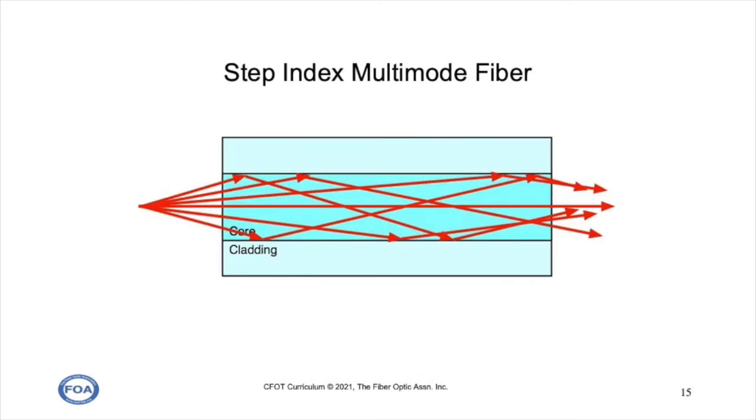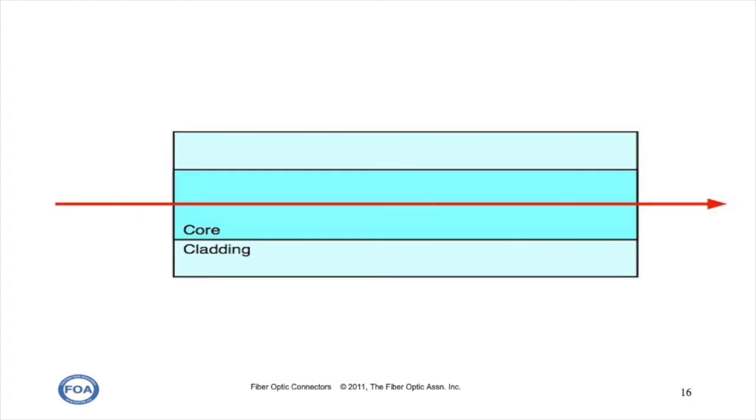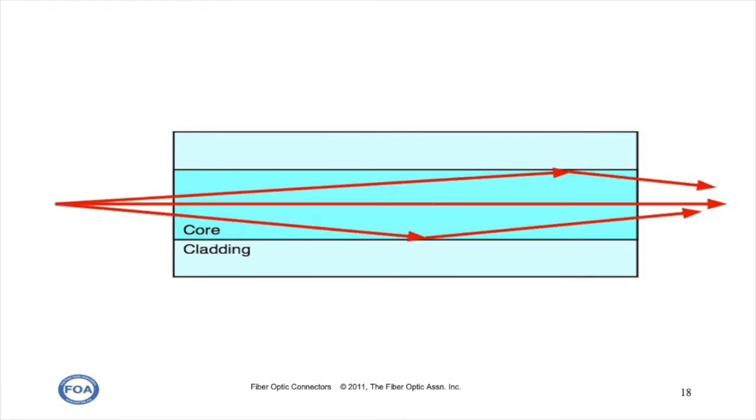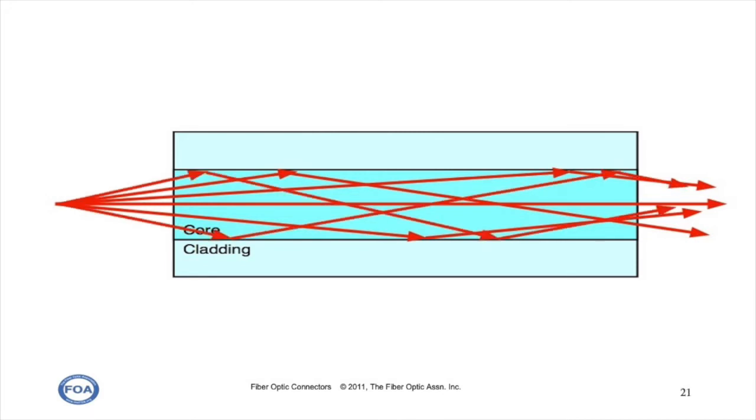Step index multi-mode fiber propagates lots of rays or modes inside the core of the fiber, and all the rays travel in straight lines, essentially bouncing from core cladding interface on either side of the fiber. The rays travel in straight lines down the center and at various angles, limited by the total internal reflection angle of the fiber, what we call numerical aperture.